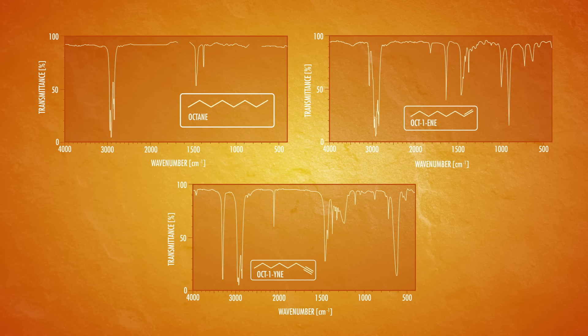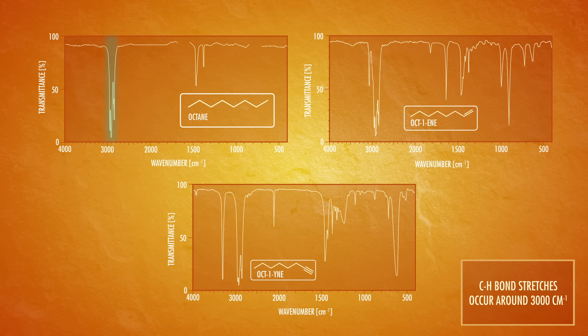Looking at the octane spectrum, we see a nicely defined set of peaks around 3,000 wave numbers. In the oct-1-ene spectrum, the peak slightly to the left of the CH stretches is the hydrogen next to the double bond. Because the double bond is a stronger bond, its CH stretch has higher wave numbers. Finally, in the IR spectrum of oct-1-yne, that sharp peak is even further to the left and at higher wave numbers, because it marks the CH stretch of the triple bond.